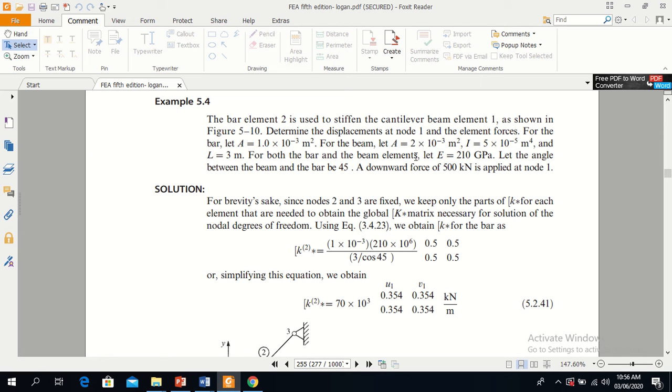Bar element and beam. E is Young's modulus and is given as 210 gigapascal. The angle is 45 degrees, and the downward force is 500 kN.